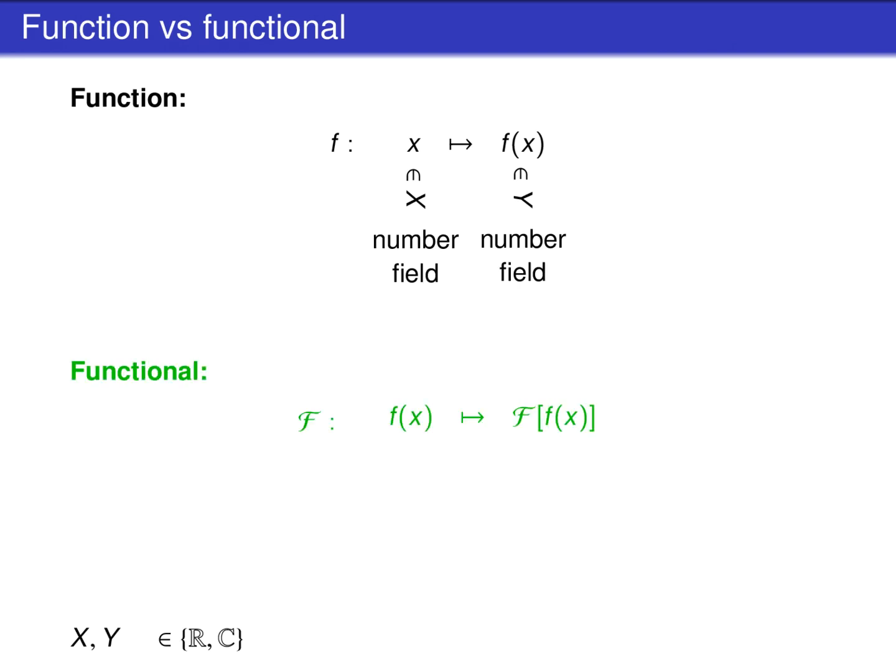A functional, in contrast, has functions as arguments. It assigns to each function f a number F[f]. Here, f means the whole function and not just the function value at x. The argument f is therefore now an element of a function space. This is a space of functions that map from a number field x to a number field y.